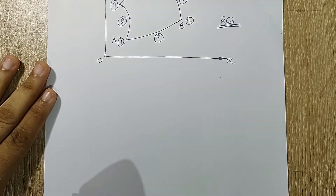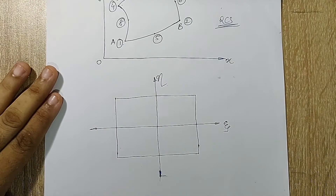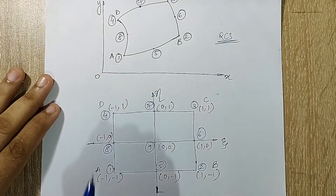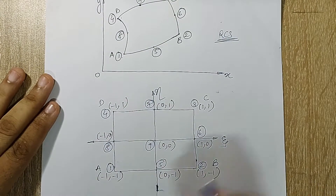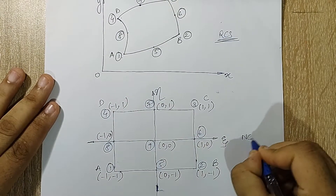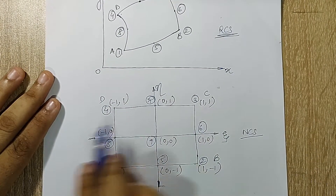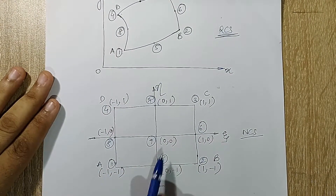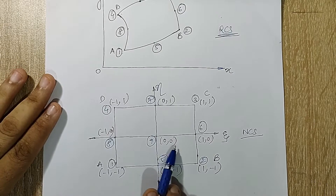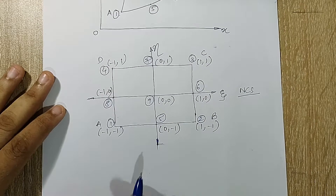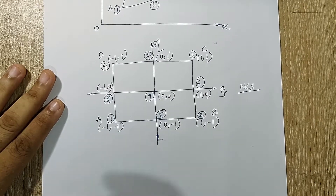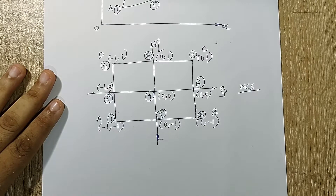I will first convert this into natural coordinate system. Now I will be marking all the nodes. You can see I have drawn this quadrilateral in natural coordinate system and I have marked all the nodes from one to nine. Node nine is at zero zero. I will start with calculation of φ₁.